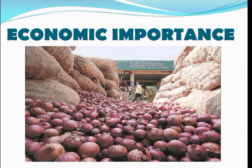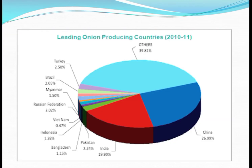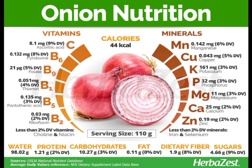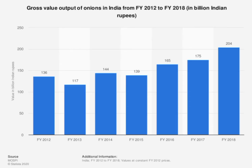Economic Importance: India is the second largest producer of onion behind China. Other major onion producing countries are Pakistan, Bangladesh, Indonesia, Vietnam, Russia, etc. Maharashtra is the leading state in onion production with more than 30% of the country's production. Onion is rich in Potassium, Phosphorus, Calcium, Magnesium, Carbohydrates, etc. Onions contributed about 204 billion Indian Rupees to the Indian economy in fiscal year 2018.